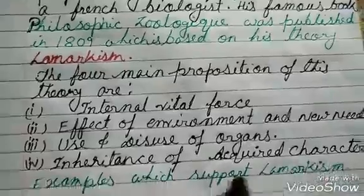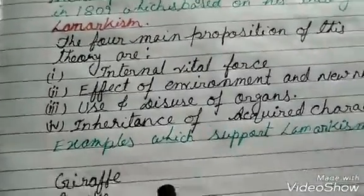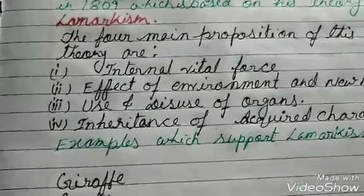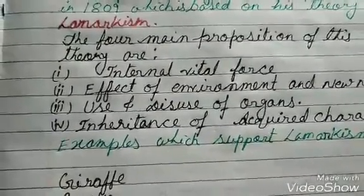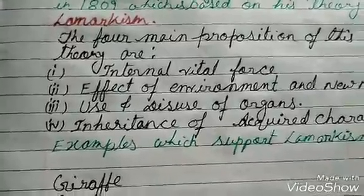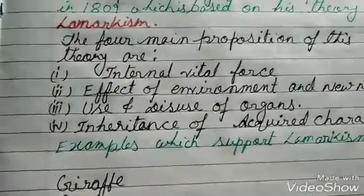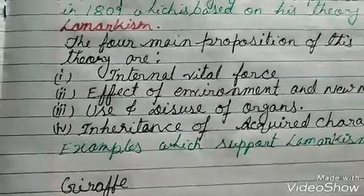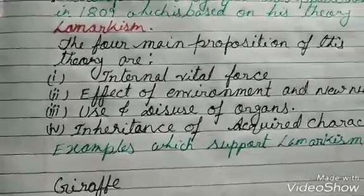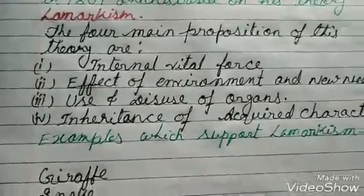Here are some examples which support Lamarckism. The first is the giraffe. The ancestors of the giraffe had a small neck and forelimbs similar to horses. As they were living in places with no surface vegetation, they had to stretch their neck and forelimbs to reach the leaves of trees, which resulted in the slight elongation of the neck and forelimbs.